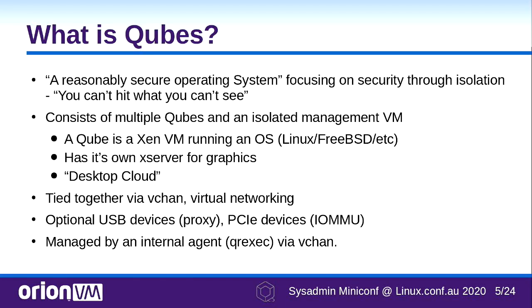What is Qubes? The standard tagline is it is a reasonably secure operating system. Some people would say that's an understatement. I would say it's a reasonable interpretation — most operating systems are unreasonably insecure at the moment. How do they achieve that reasonable security? The answer is security through isolation, which is the only thing you can really do to help mitigate things. You can't hit what you can't see — that is security by isolation in a nutshell.